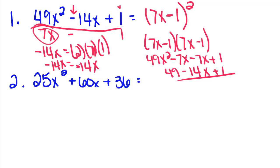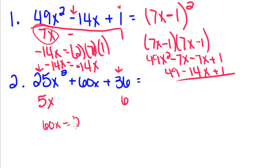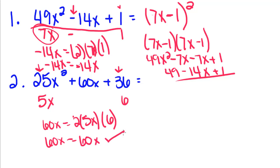We're going to do one more example with factoring perfect square trinomials. They're pretty easy because all you have to do is recognize them and remember the formula. We have to make sure the first and last terms are perfect squares. The square root of 25 is 5, the square root of x squared is x, and the square root of 36 is 6. Now we check: is 60x equal to 2 times 5x times 6? Well, 2 times 5x is 10x, times 6 is 60x. Yes, that does work.